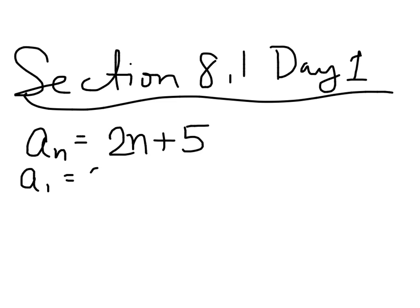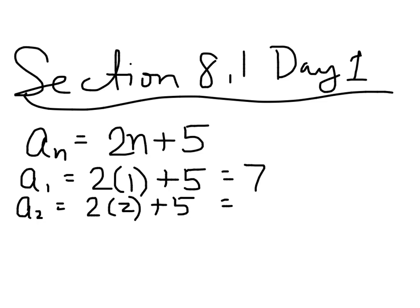So, a sub 1 would mean I'm putting 1 in for n. What's 2 times 1 plus 5? 7. Good. Now, I'm going to put 2 in there. What's 2 times 2 plus 5? 9. A sub 3. What's 2 times 3 plus 5? 11. Now, I think you already see the pattern, but they're going to ask you to do the first six terms.